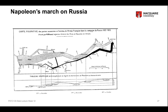So we have time being displayed, direction of march being displayed, and size of the army being displayed. We also have XY coordinates in terms of geography — France is down here, Russia over here — and a roughly north-south axis. We also have temperature being displayed: the temperature when they left Moscow and the temperature as they got back towards France.